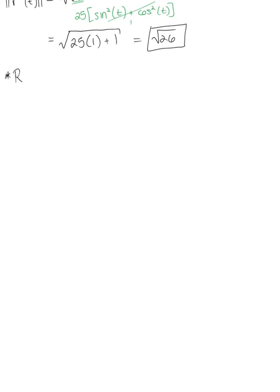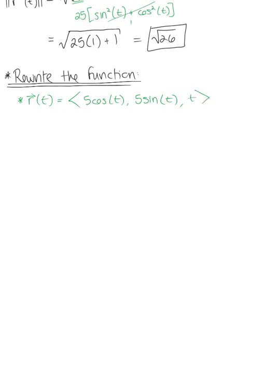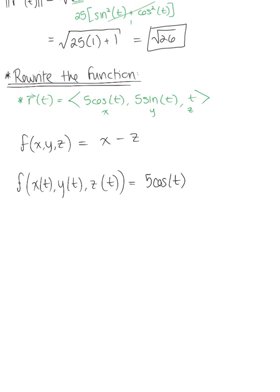So the next thing that we want to do is rewrite the given function and rewrite your integrand. So we'll keep in mind here our parameterization of the helix was five cos of t, which is the x component. We have five sine of t, which was the y component, and then t was our z. And we're going to use this to rewrite our given function of the integrand, f of x, y, z, which was defined as x minus z. So rewriting this or parametrizing this in terms of t, this becomes five cosine of t minus t. And we're ready to set up the integral.